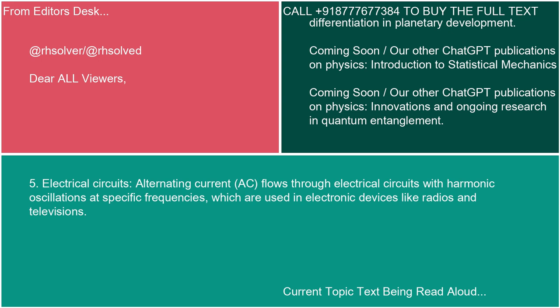5. Electrical Circuits. Alternating Current (AC) flows through electrical circuits with harmonic oscillations at specific frequencies, which are used in electronic devices like radios and televisions.